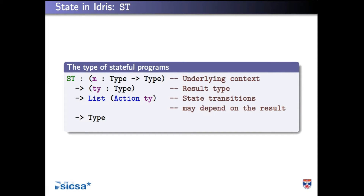Here's the core of what's going on in the library. Everything is based around this type ST — it stands for state transformer, and I call it ST because that's what the Haskell state transformer type is called. It's somewhat familiar to what we talked about yesterday: you have the type of the operation, the precondition, and then the effect of that operation on the environment. Instead of just having the input state and output state, we have a list of all the things that happen to the state. That list of actions represents transitions from input to output.